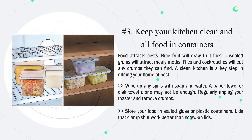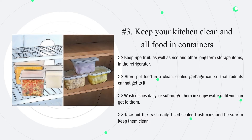Regularly unplug your toaster and remove crumbs. Store your food in sealed glass or plastic containers — lids that clamp shut work better than screw-on lids. Keep ripe fruit as well as rice and other long-term storage items in the refrigerator. Store pet food in a clean, sealed garbage can so that rodents cannot get to it. Wash dishes daily or submerge them in soapy water until you can get to them. Take out the trash daily, use sealed trash cans, and be sure to keep them clean.